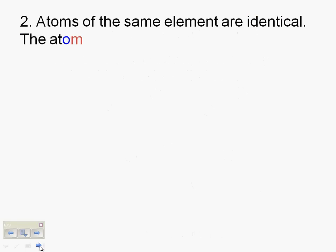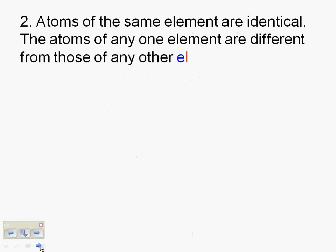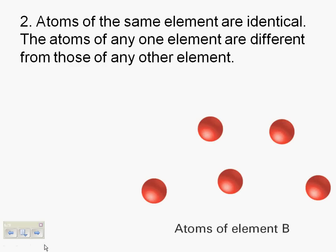The second bit: atoms of the same element are identical. Atoms of any one element are different from those of any other element. And we have a picture of atoms of element B. Two different sizes for A and B, two different colors to help you identify them.